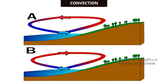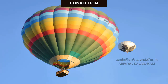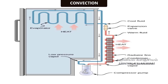Now, let's see about convection in daily life. Formation of land breeze and sea breeze is due to the convection of air. Wind flows from one region to another region by convection. In hot air balloons, heat is transferred by convection and so the balloon rises. In refrigerators, cool air moves downward and replaces the hot air because of convection.